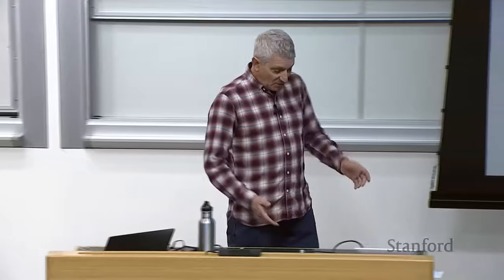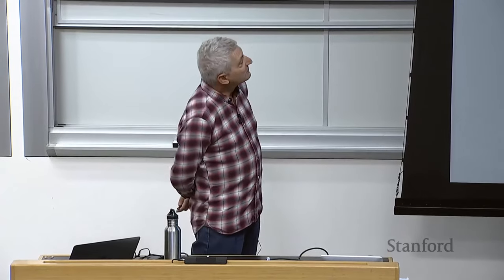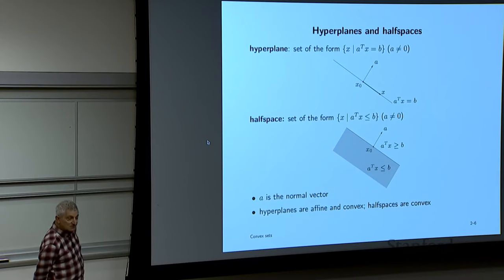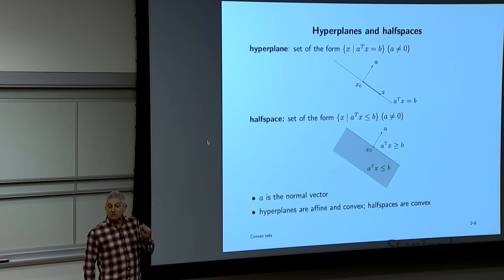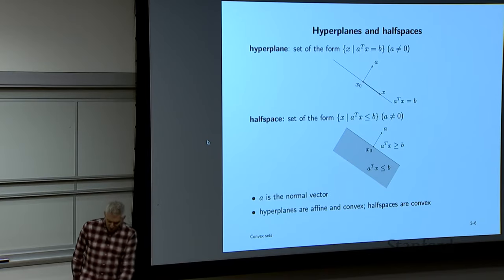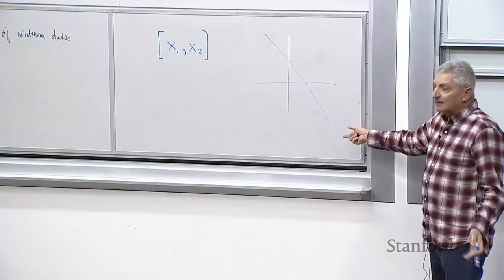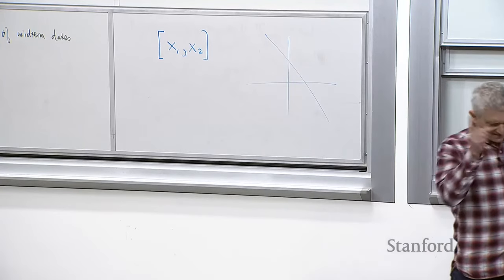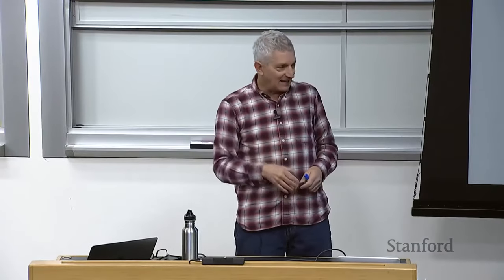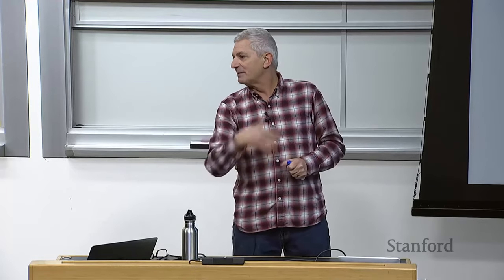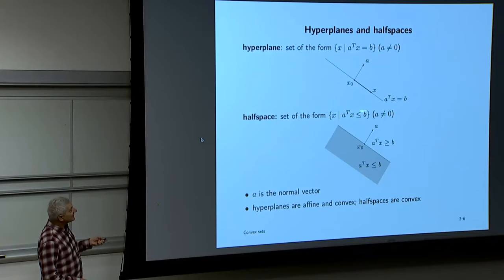Now we'll get to some stuff that's hopefully review. A hyperplane is the solution set of a single non-zero linear equation — the set of X for which A-transpose X equals B. In two dimensions it looks like a line; in three dimensions it's literally a plane; in higher dimensions it's what people call a hyperplane. That's kind of standard linear algebra.